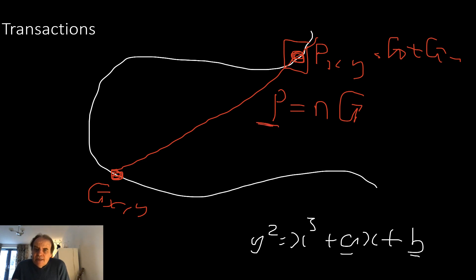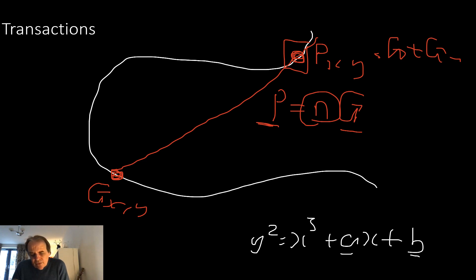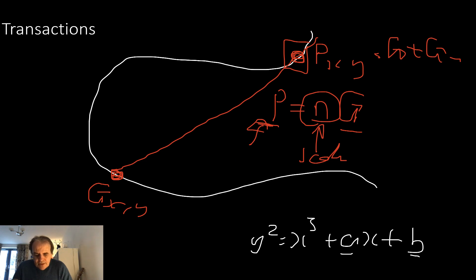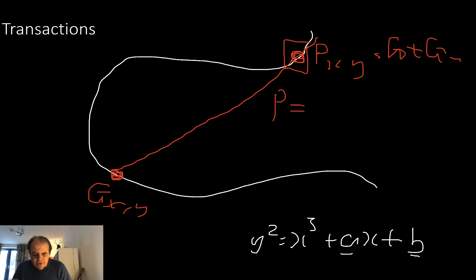P is the public key, G is the generator point, and n is the private key. It's n that we keep secure and should not be released. n is a scalar value because it's a multiplier, while P and G are point values because they are x and y points. This is how elliptic curve methods work, and we typically use them to sign transactions.